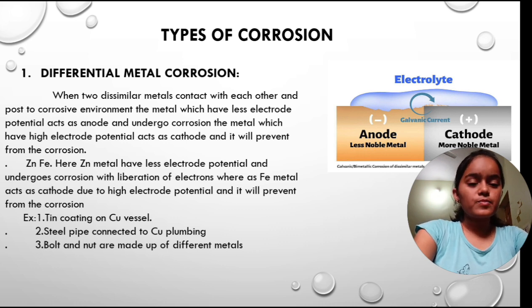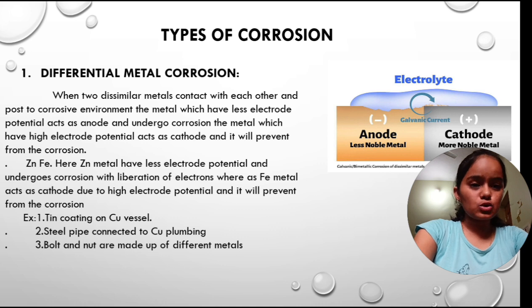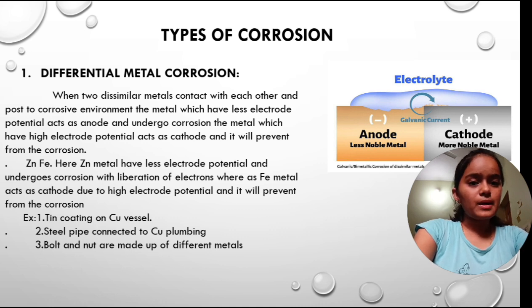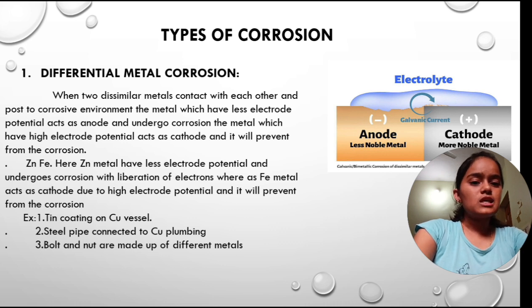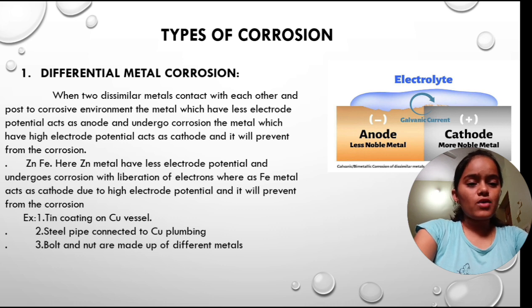First, differential metal corrosion. When two dissimilar metals come into contact with each other and are exposed to a corrosive environment, the metal which has less electrode potential acts as anode and undergoes corrosion. The metal which has high electrode potential acts as cathode and is protected from corrosion. For example, zinc metal has less electrode potential and undergoes corrosion with liberation of electrons, whereas iron metal acts as cathode due to high electrode potential and is protected from corrosion.